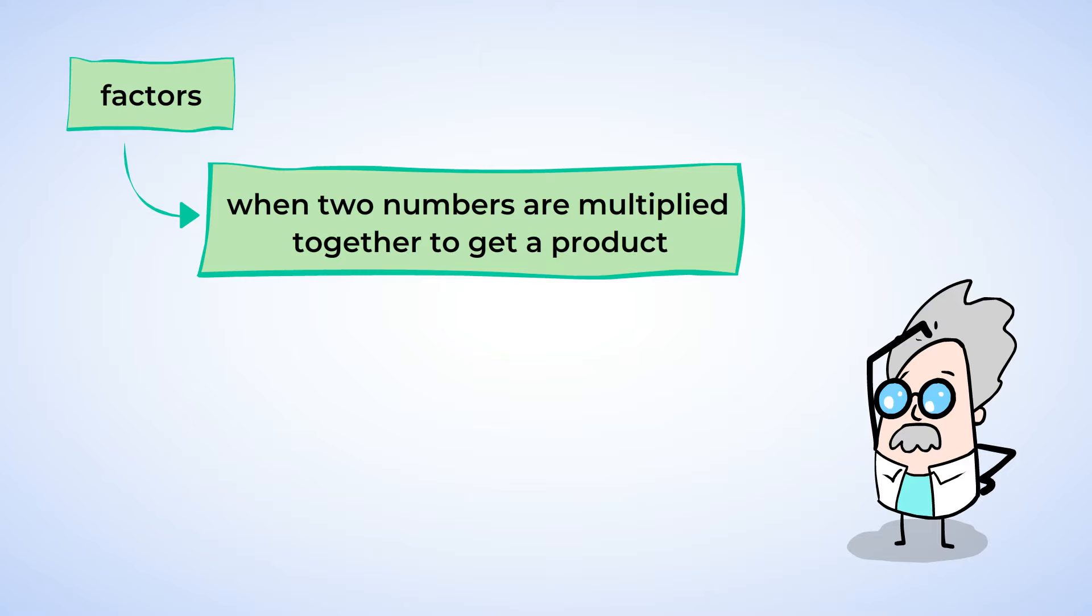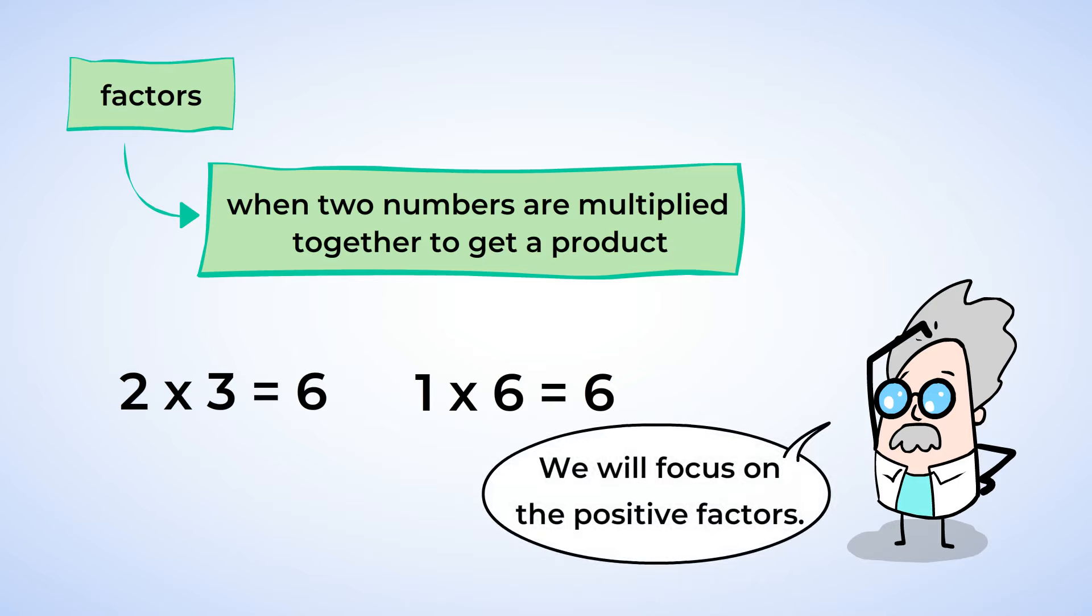Factors can be helpful when we are working with multiplication and division. For example, we know that 2 multiplied by 3 is 6, and this means that 2 and 3 are factors of 6. Can you think of any other numbers that multiply to get 6? I can. 1 and 6 are also factors of 6. Factors can be positive or negative whole numbers, but we are going to focus just on the positive factors.